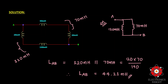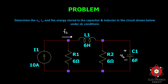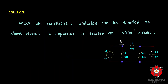The next problem involves a combination of resistor, inductor, and capacitor. We need to find Vc (voltage across the capacitor), IL (current through the inductor), and energy stored in each, under DC conditions. Under DC, the inductor is treated as a short circuit and the capacitor as an open circuit, since the capacitor blocks DC and allows only AC signals.